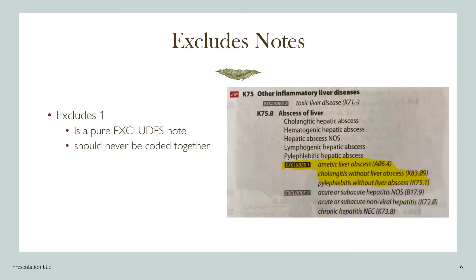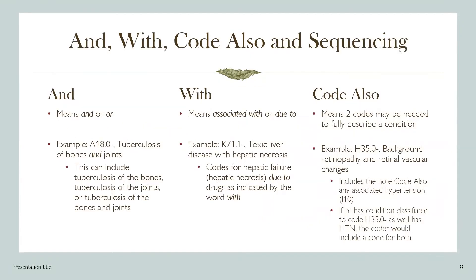There is an important exception to the excludes one note. Coders may code for both conditions if they are unrelated to each other. The reason for this is that sometimes a diagnosis code is a general code for a condition that can manifest in multiple ways.